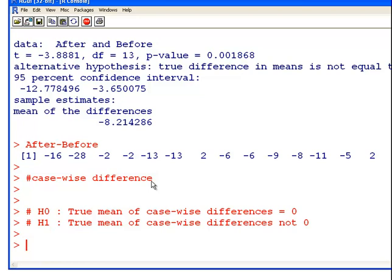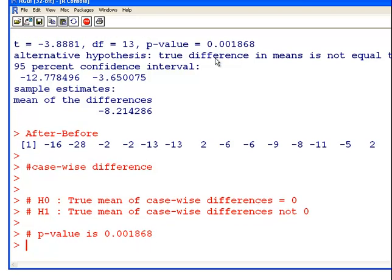We also got the mean of the case-wise differences. We have 95% confidence interval and the mean of the case-wise differences and we also have a p-value here. The p-value is 0.001868. Small p-value. So reject null hypothesis.